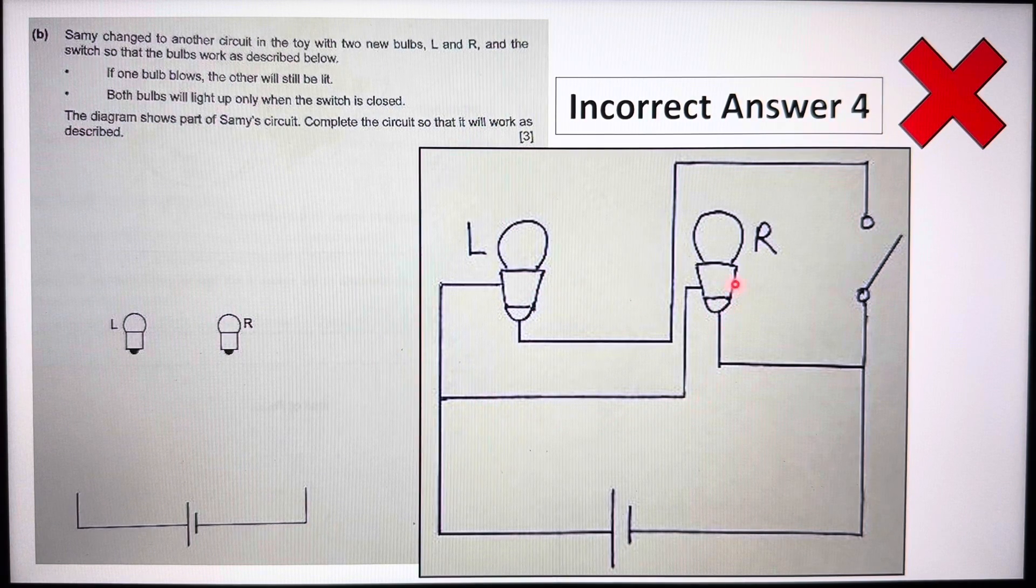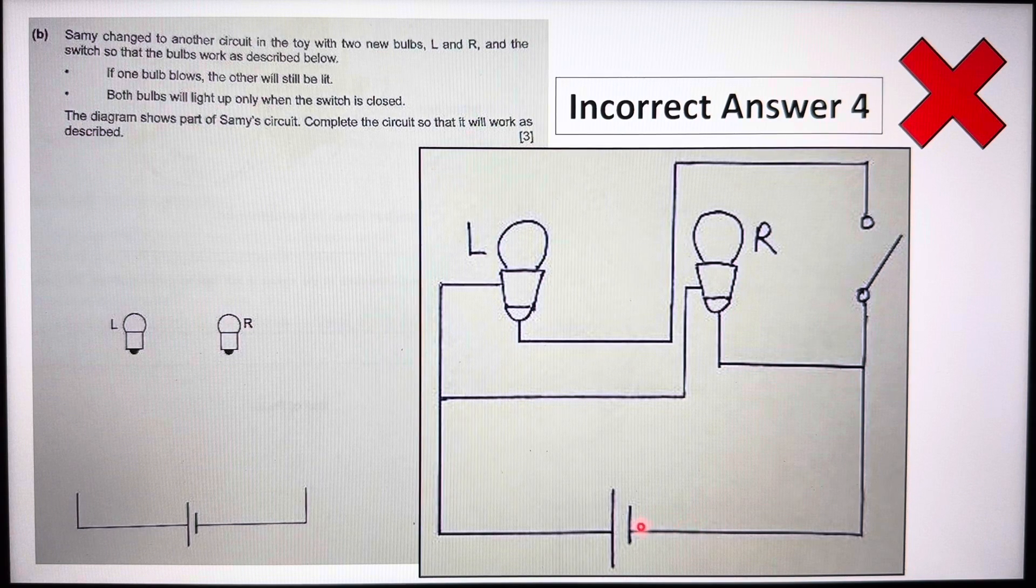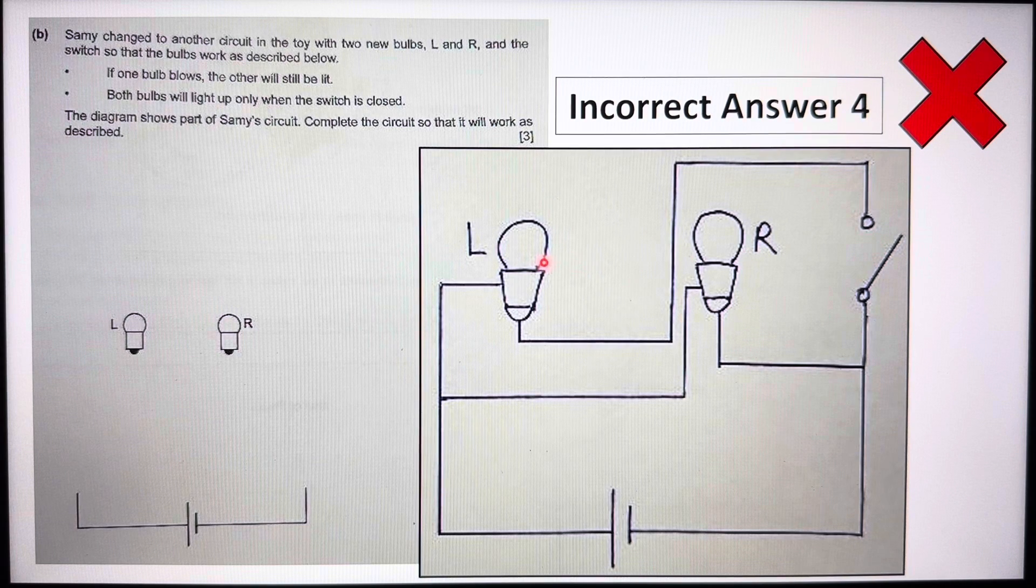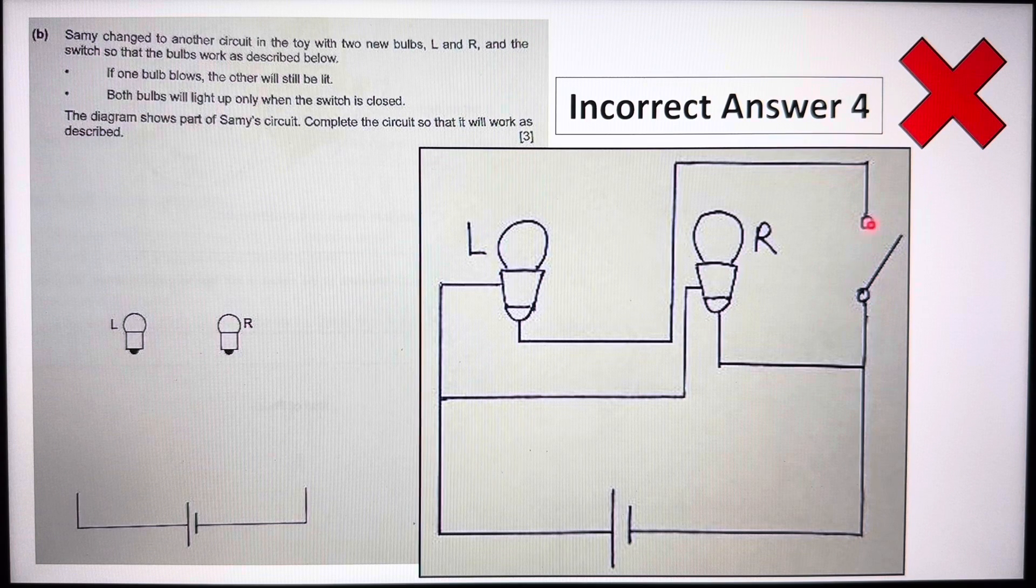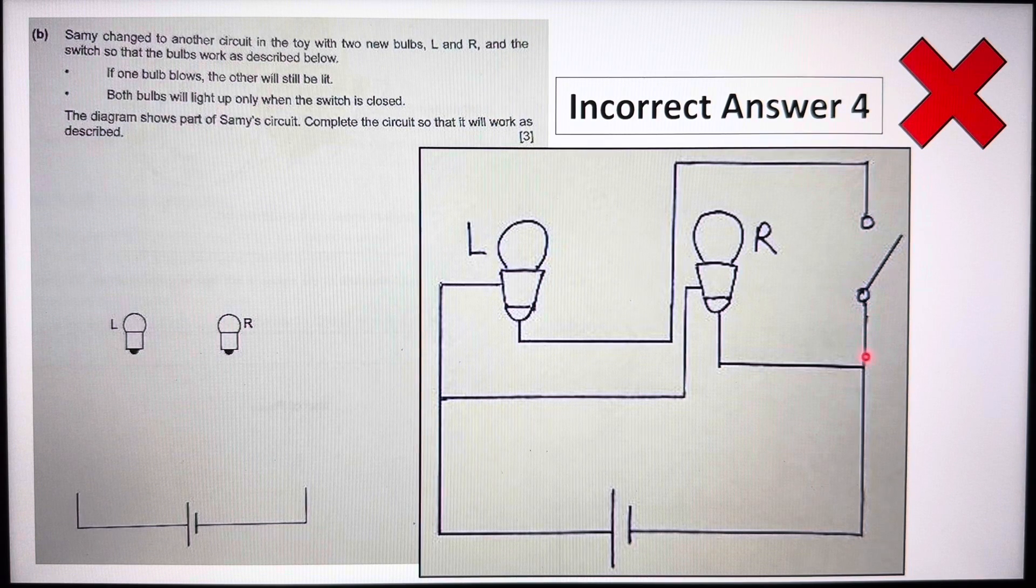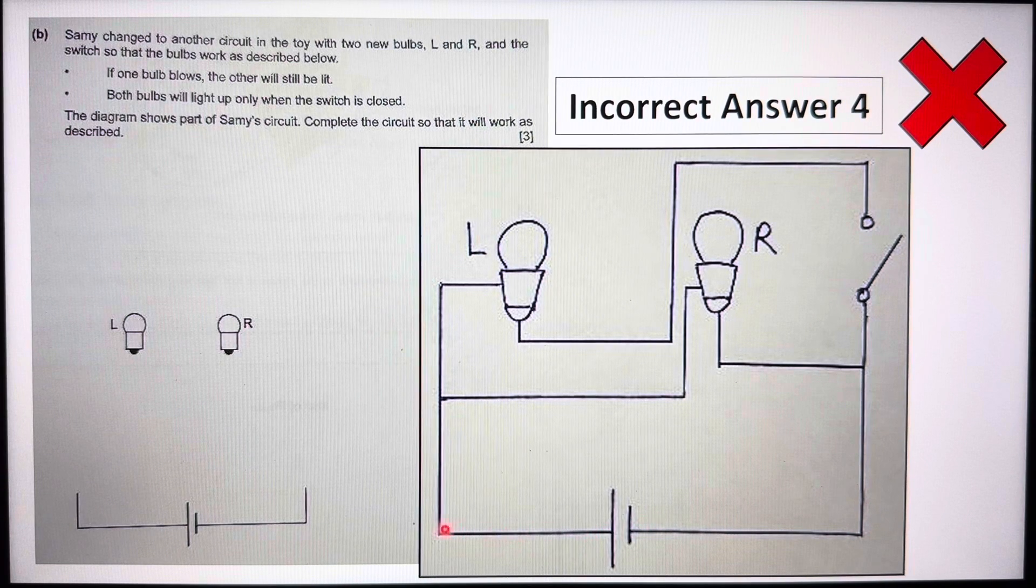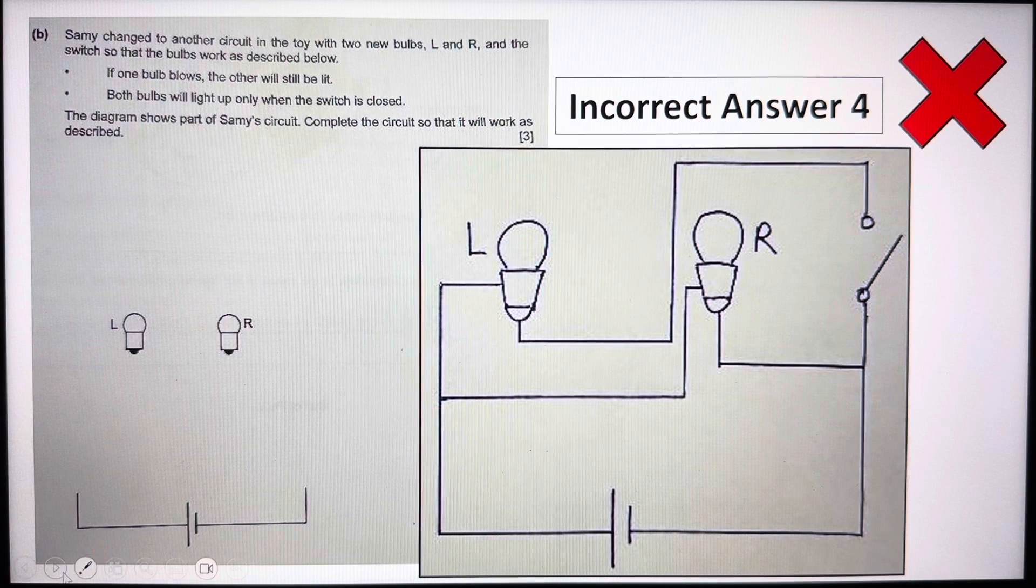Bulb R will be permanently lit with the battery connected like that. So the switch is only controlling L and not controlling bulb R. So this is definitely wrong as well. I cannot have the switch here. I can only have the switch here, as mentioned many times.